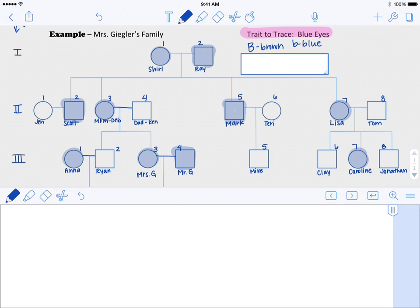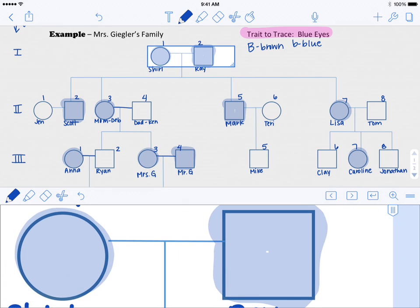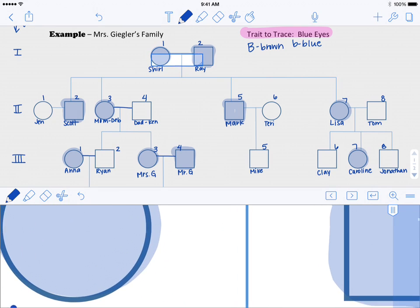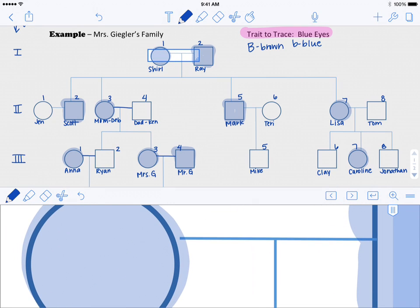Sometimes we have to take a look at the inheritance pattern that we see and try to figure out if it's a dominant trait or a recessive trait or if it could even be sex linked. Now since we know that blue eyes are recessive, it makes some people's genotypes really easy to determine. We know that everyone who is shaded is showing the recessive trait, so that means their genotype must be little b, little b.